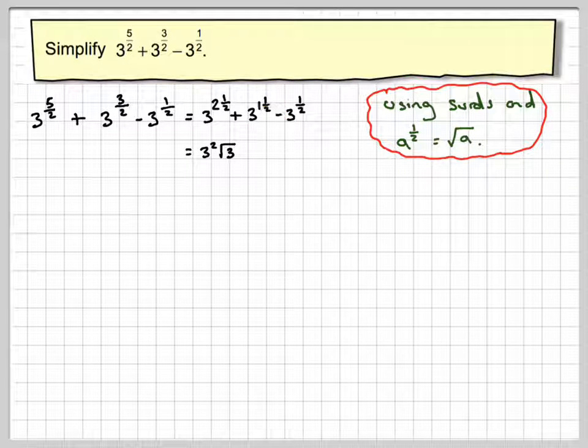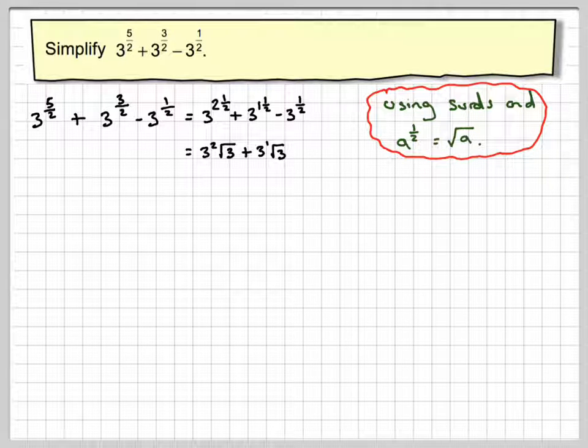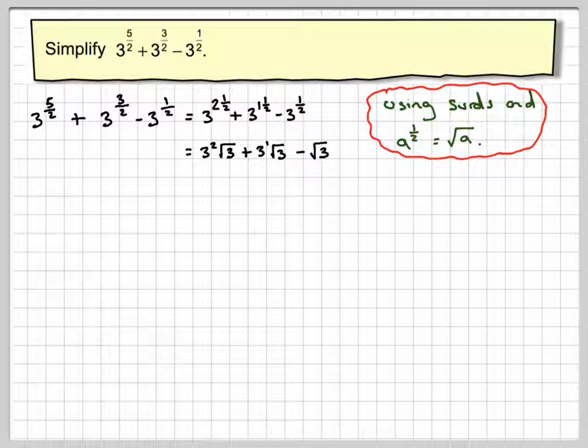Here we're going to have 3 times root 3, and then we're going to have minus root 3.